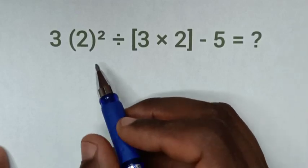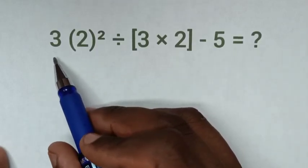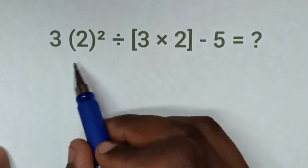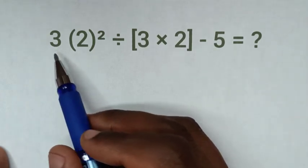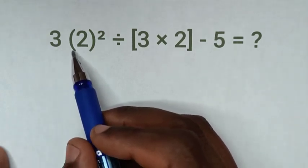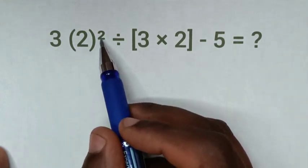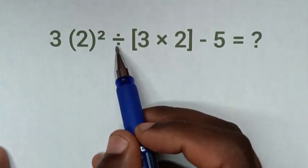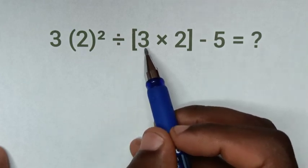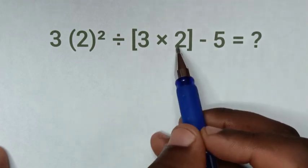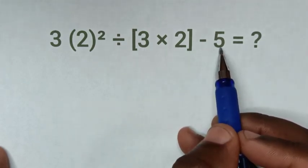Hello, you are welcome. Here is how to solve this math problem: 3 parenthesis 2 parenthesis squared, divided by squared bracket 3 times 2 squared bracket, minus 5.